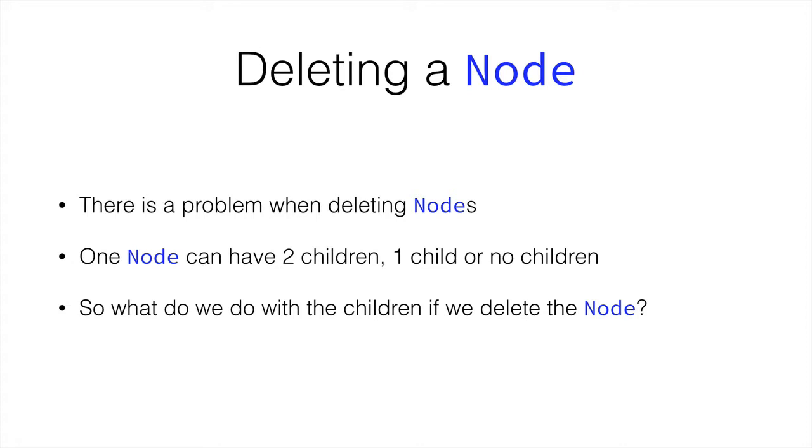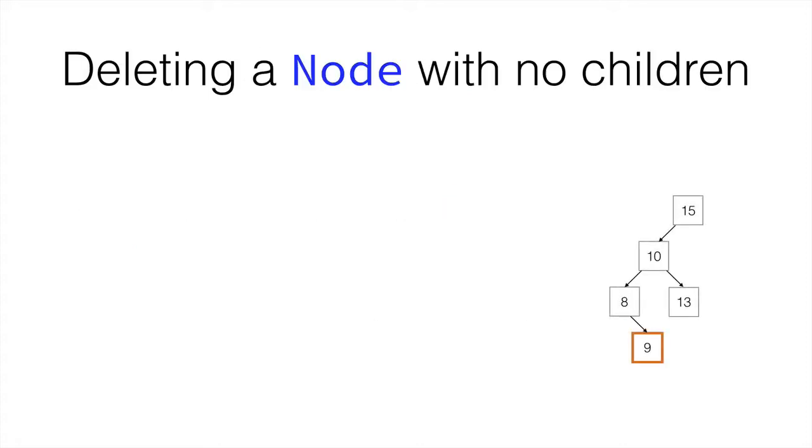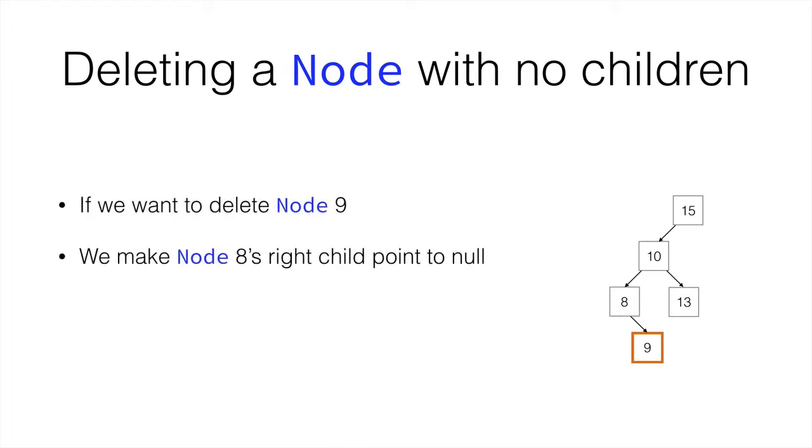First let's look at the simplest option which is how to delete a node that has no children. For example, here we want to delete node 9. We simply make node 8's right child which is 9 point to null and then Java erases node 9.